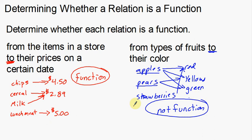Now I know these examples don't deal with numbers, but you can see the similarity with numbers, especially with the grocery store example and the prices on a certain date. That is determining whether a relation is a function — a couple of real-life examples of whether things in real life are actual functions. As a reminder: a function, for every input there is a unique output. Whenever you buy chips on a certain date, they are only going to be $4.50 — that is a function. Apples can be red, yellow, or green — that makes it not a function. I hope this video was helpful to you.